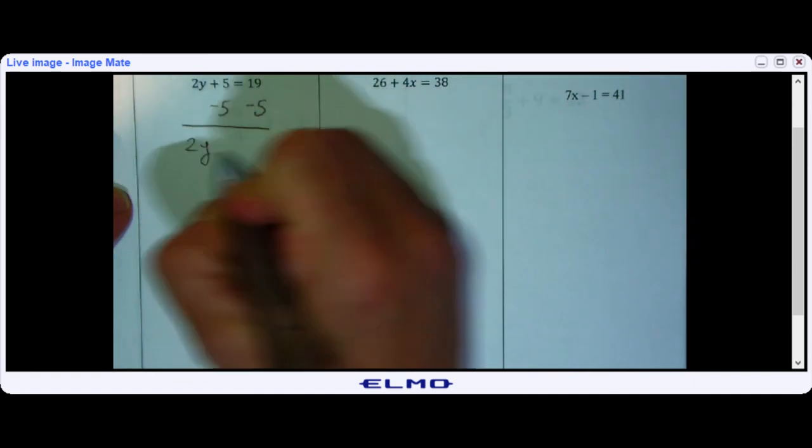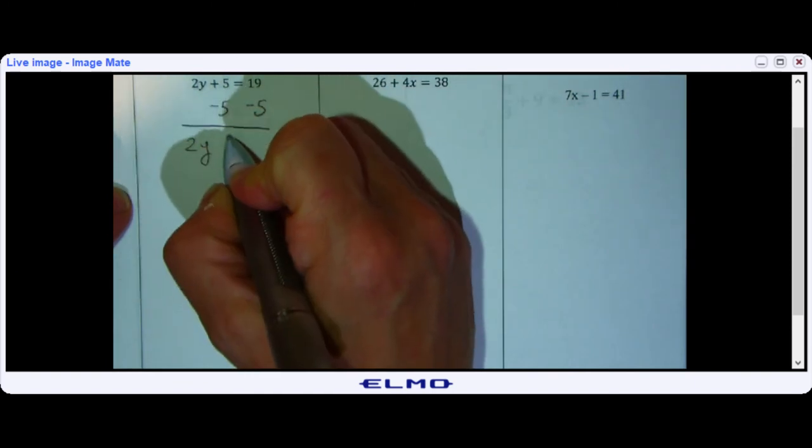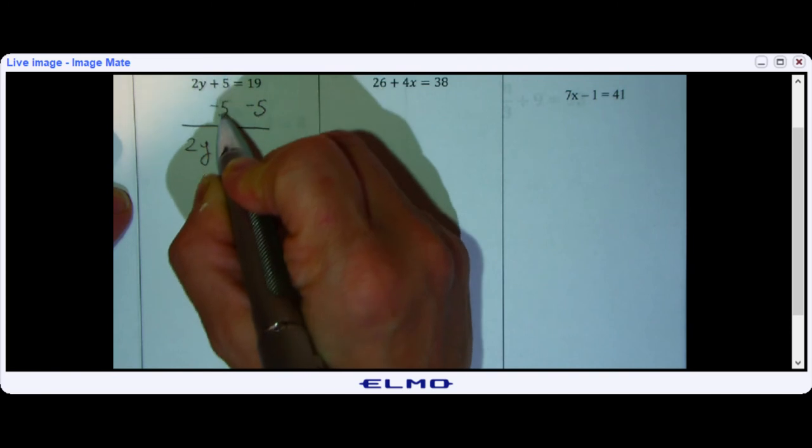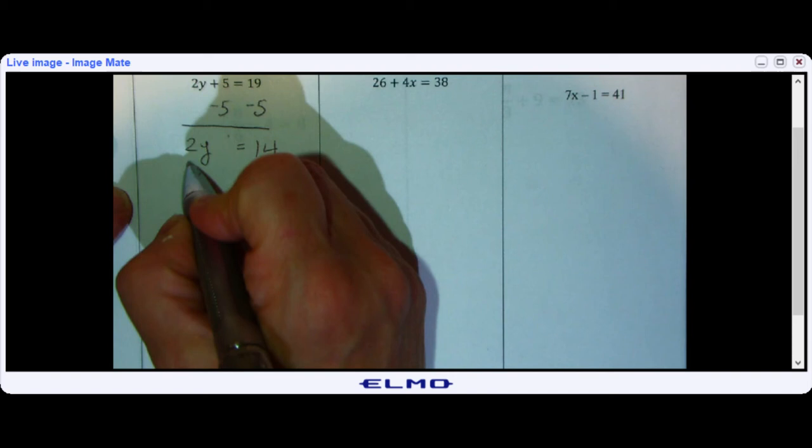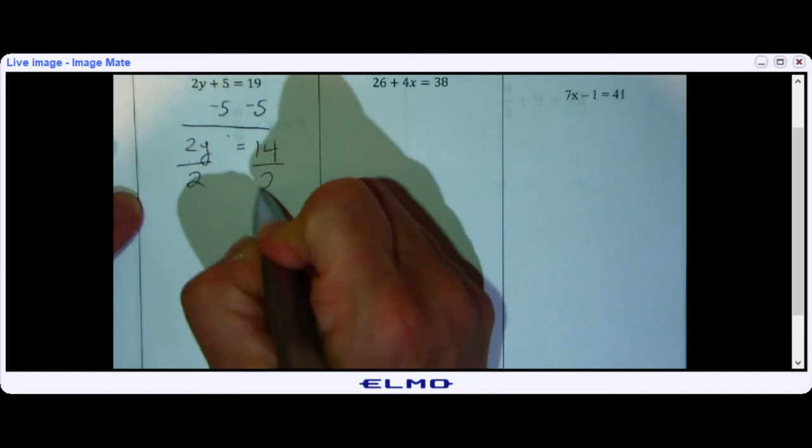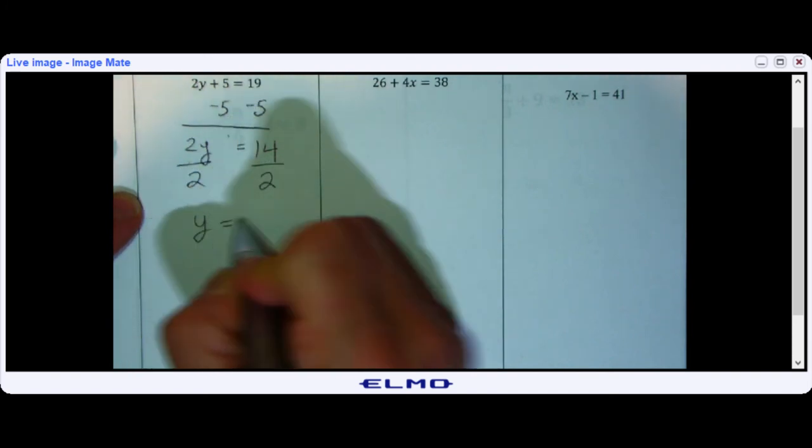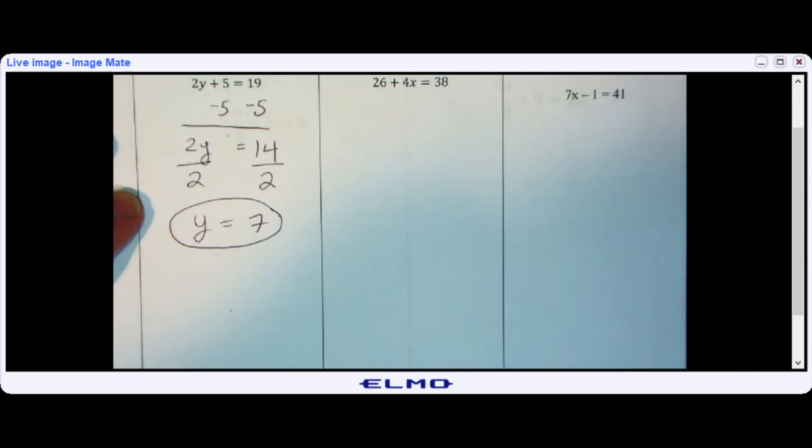Then you have 2y plus 0, because plus 5 minus 5 is 0, is equal to 14. Now I want to divide both sides by 2, and I get y is equal to 7. Hopefully that's what you got.